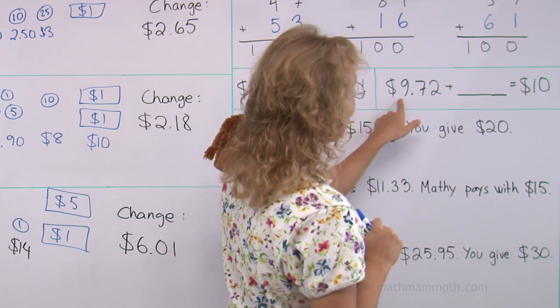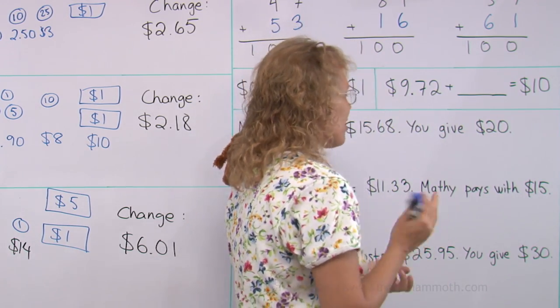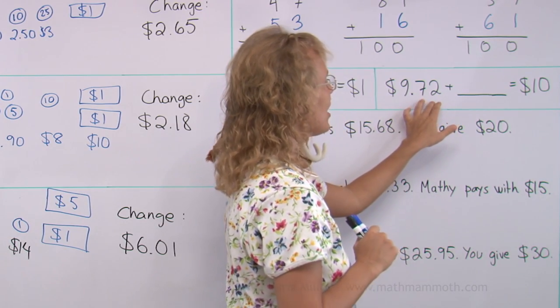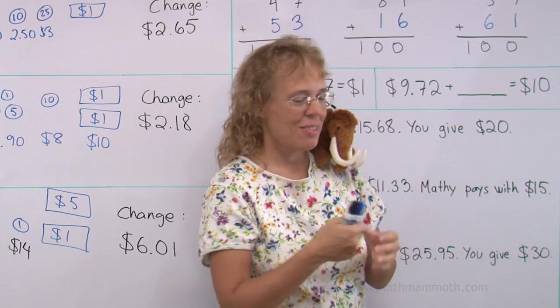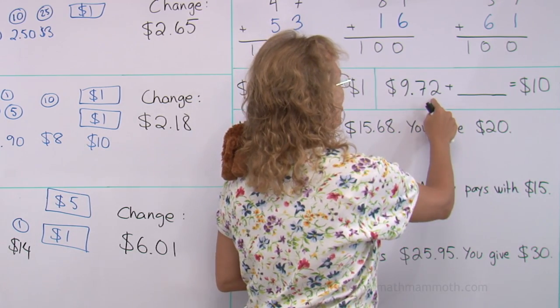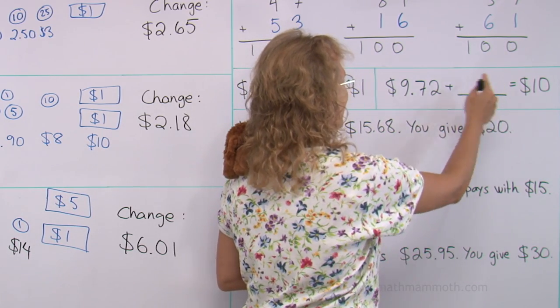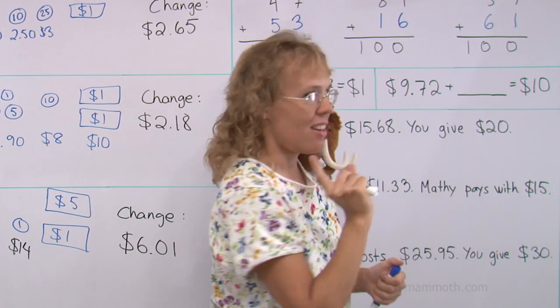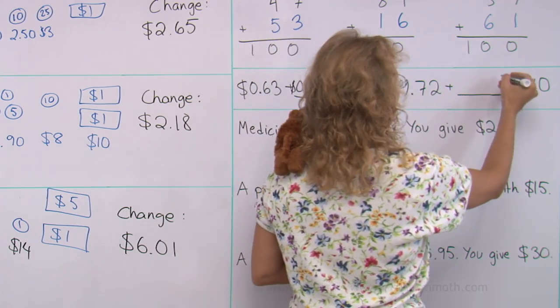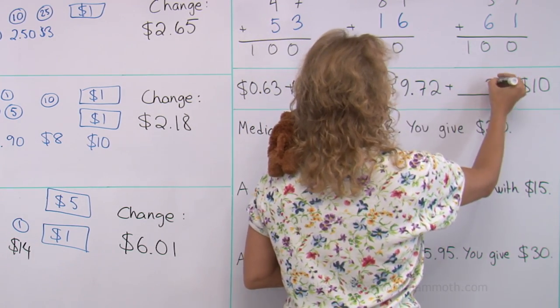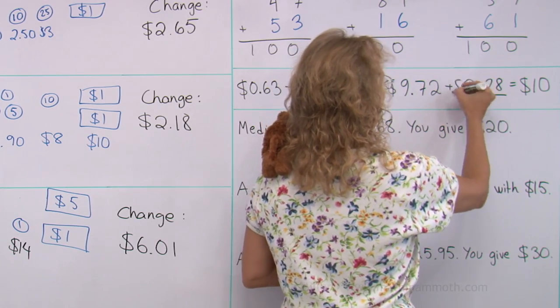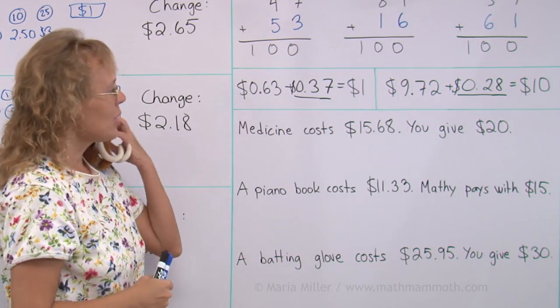$9.72 plus how much makes $10? We already have $9, so all we need to think about is the 72 cents and how many more makes 100 cents. So again, 2 and how many makes 10? And then 7 and how many makes 9? 2 and 8, and 7 and 2. So 28 cents.